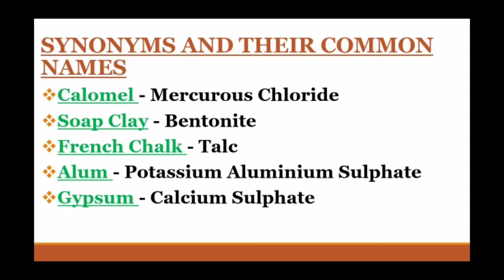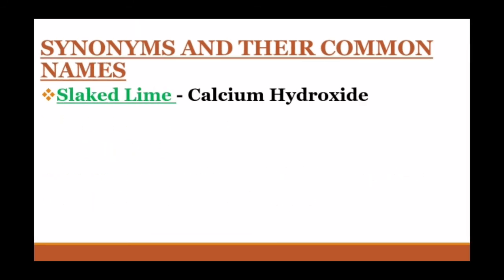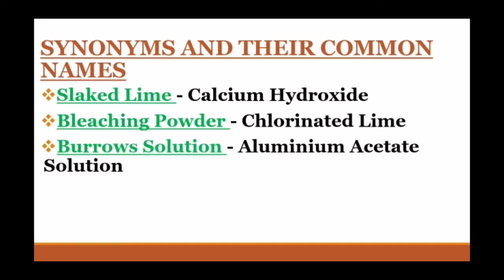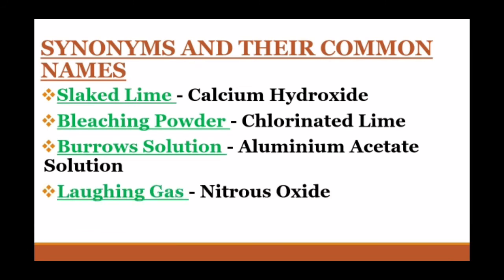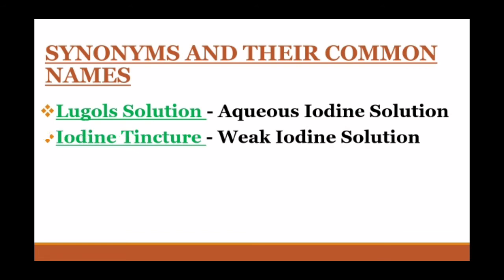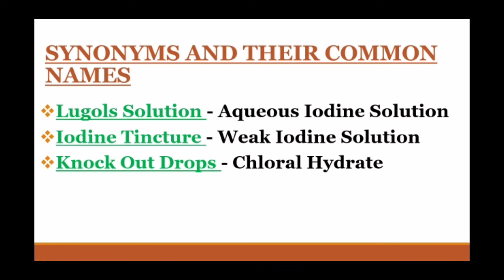Gypsum's common name is calcium sulphate. The next synonym is slaked lime, also called calcium hydroxide. Bleaching powder is called chlorinated lime. Burrow's solution is called aluminium acetate solution. Laughing gas is called nitrous oxide. Lugol's solution is called aqueous iodine solution. Iodine tincture is called weak iodine solution. Knockout drops are also called chloral hydrate.